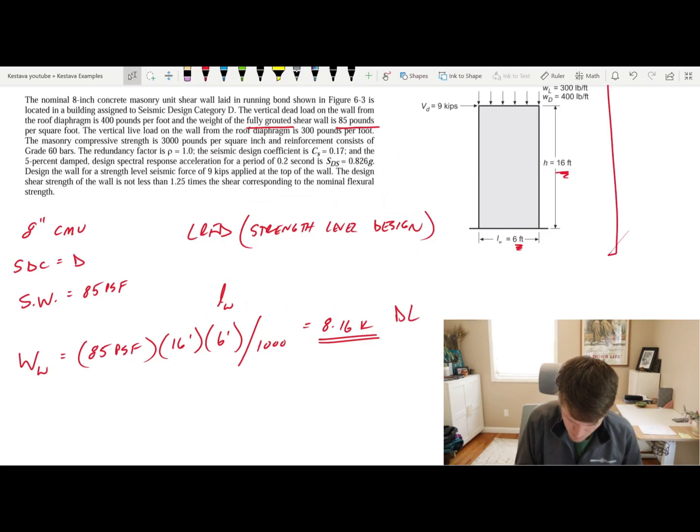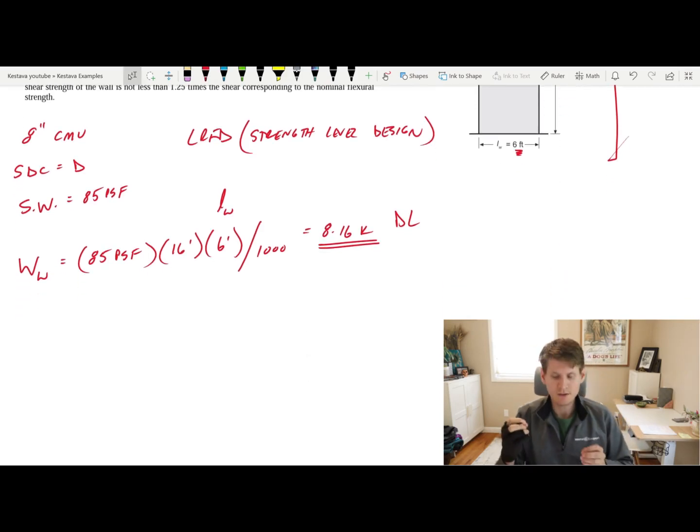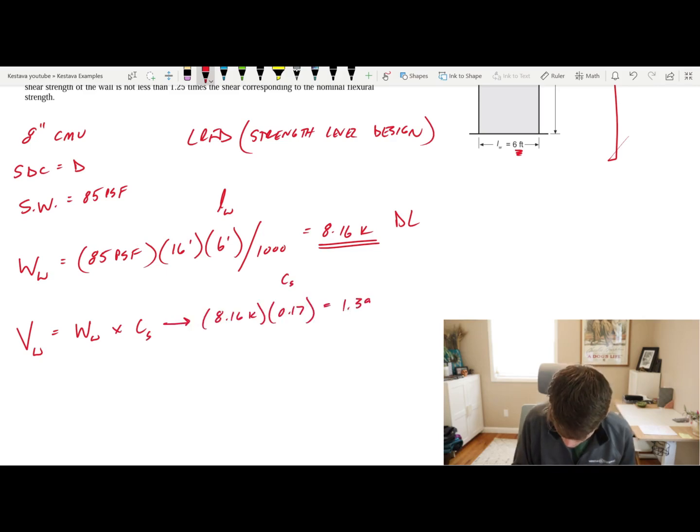Another good piece of info: rho equal to 1.0, C sub S 0.17. Now we are going to calculate the additional lateral force that is induced on this wall, induced by the self-weight of the wall itself, not just from the diaphragm forces. We'll call that VW. That'll be the additional shear demand on the wall from the self-weight of the wall itself, equal to the weight of the wall times C sub S. That spits out 1.39 kips. That is additional E horizontal.